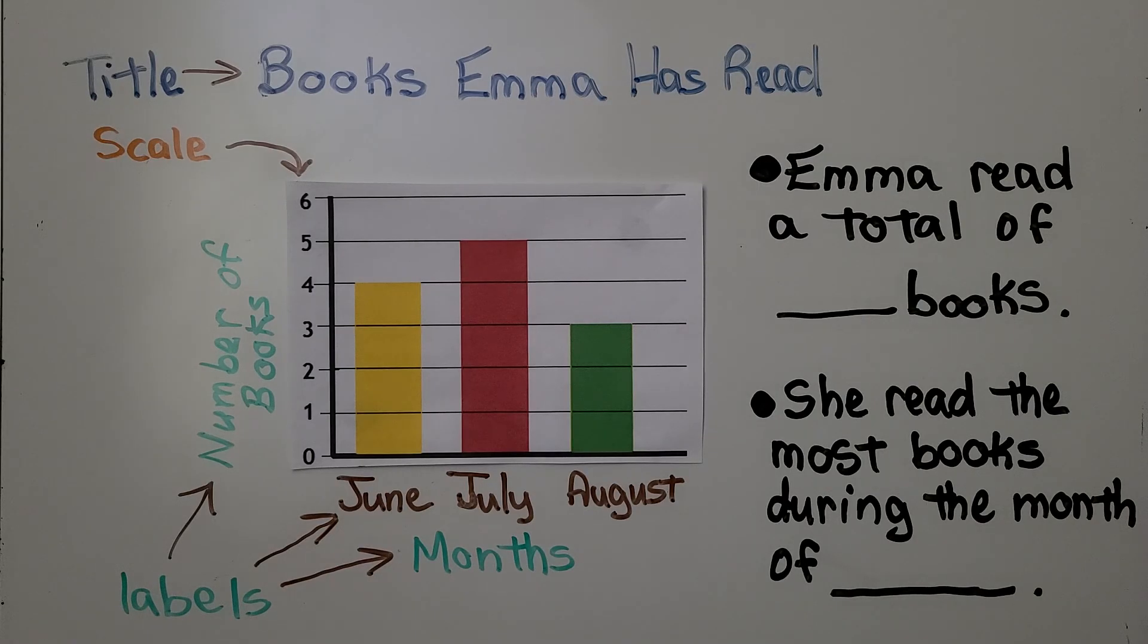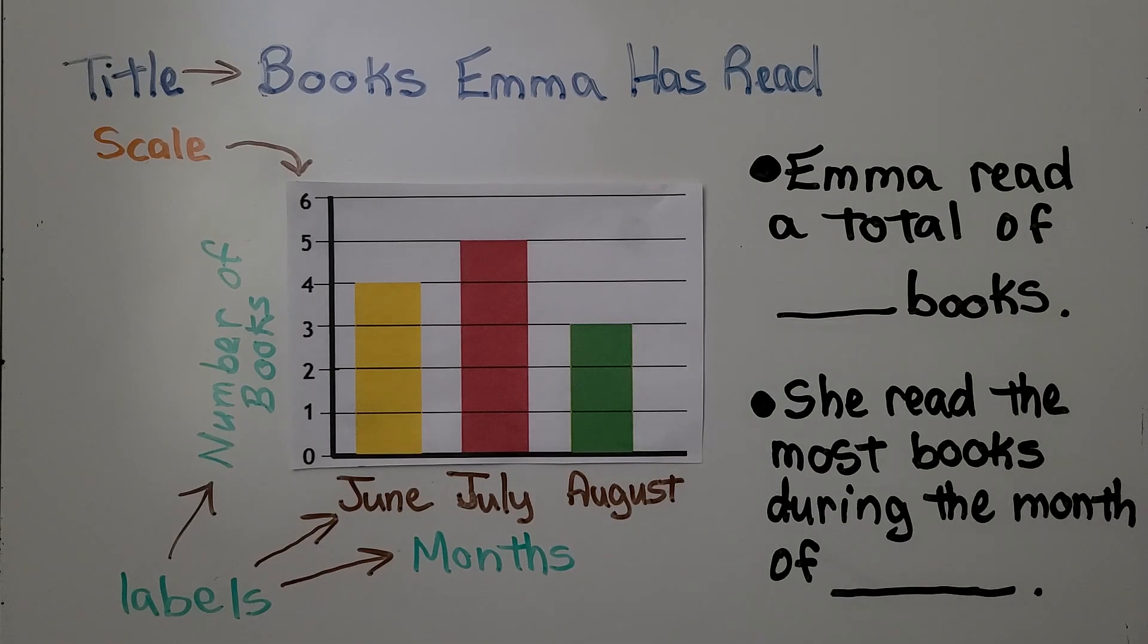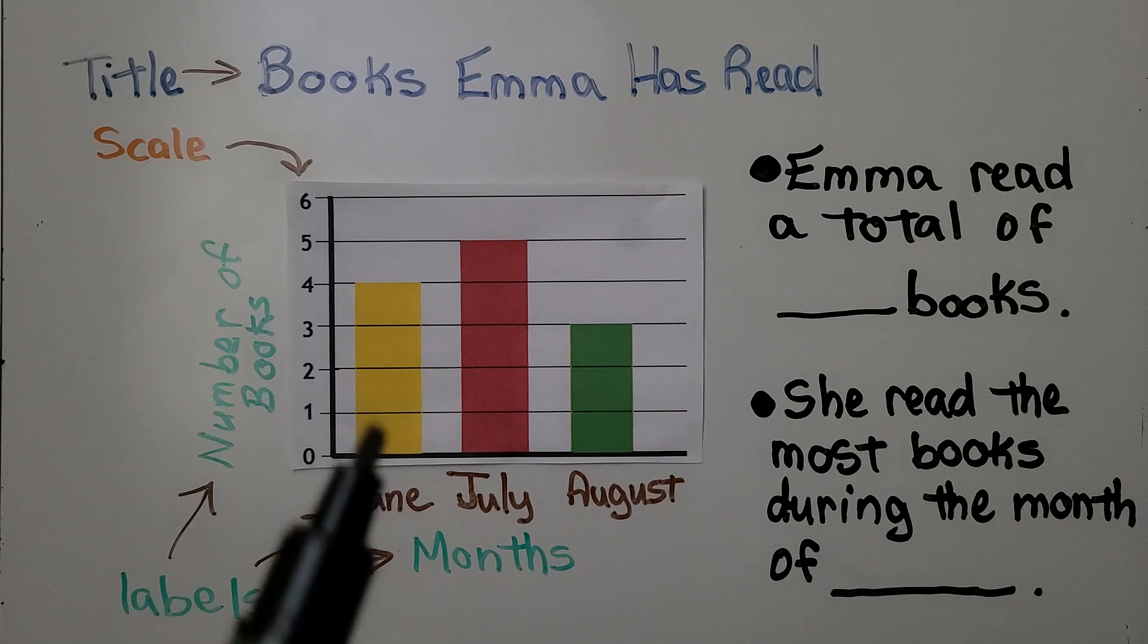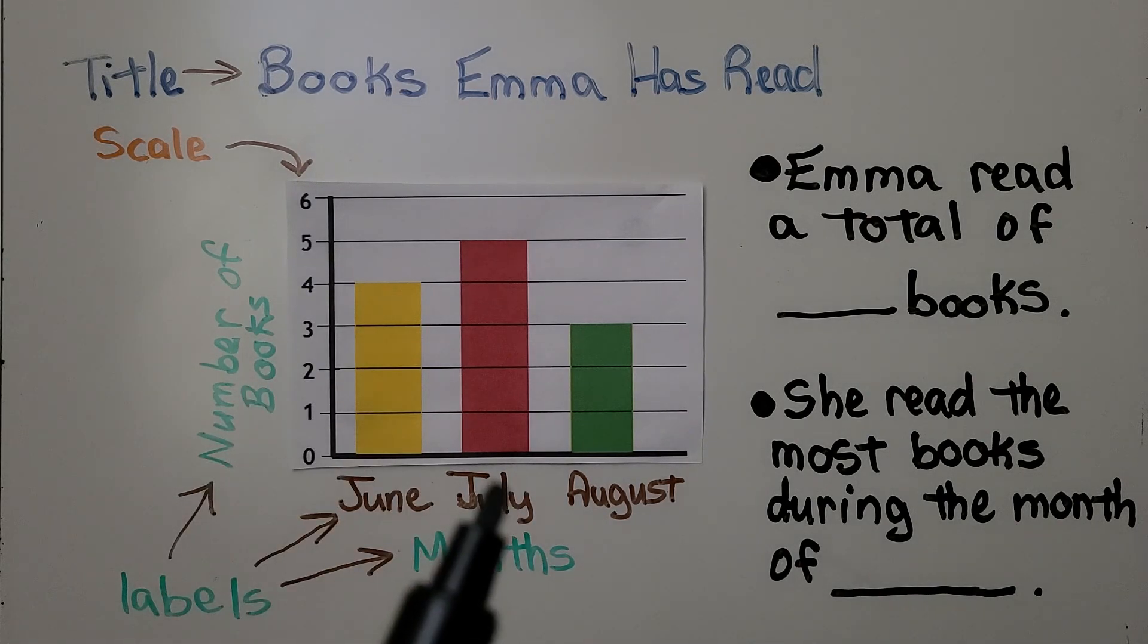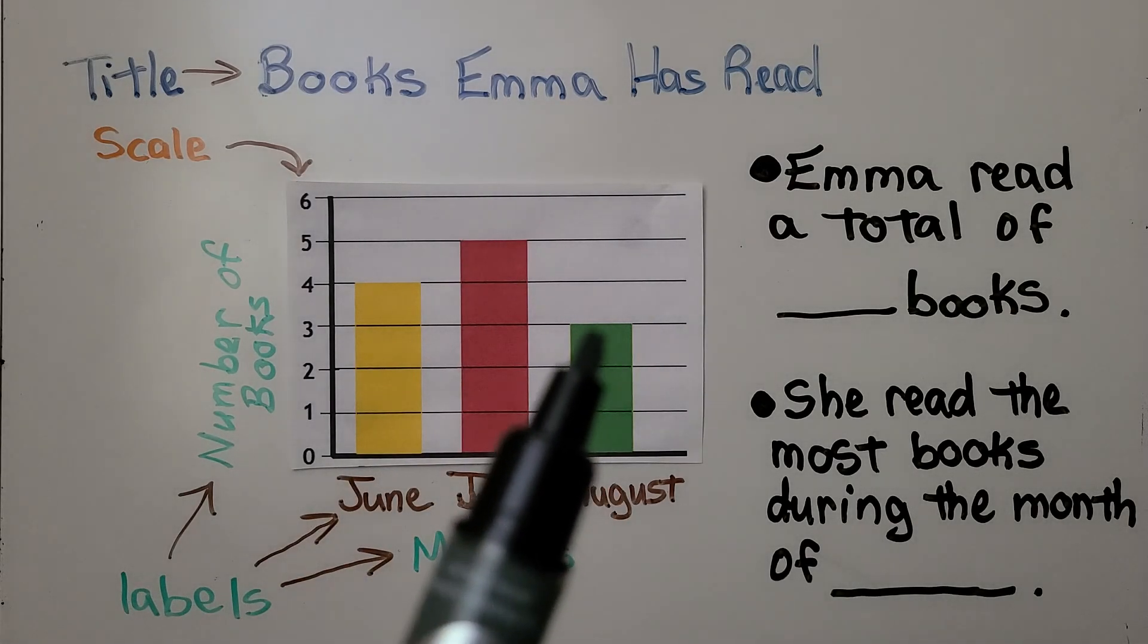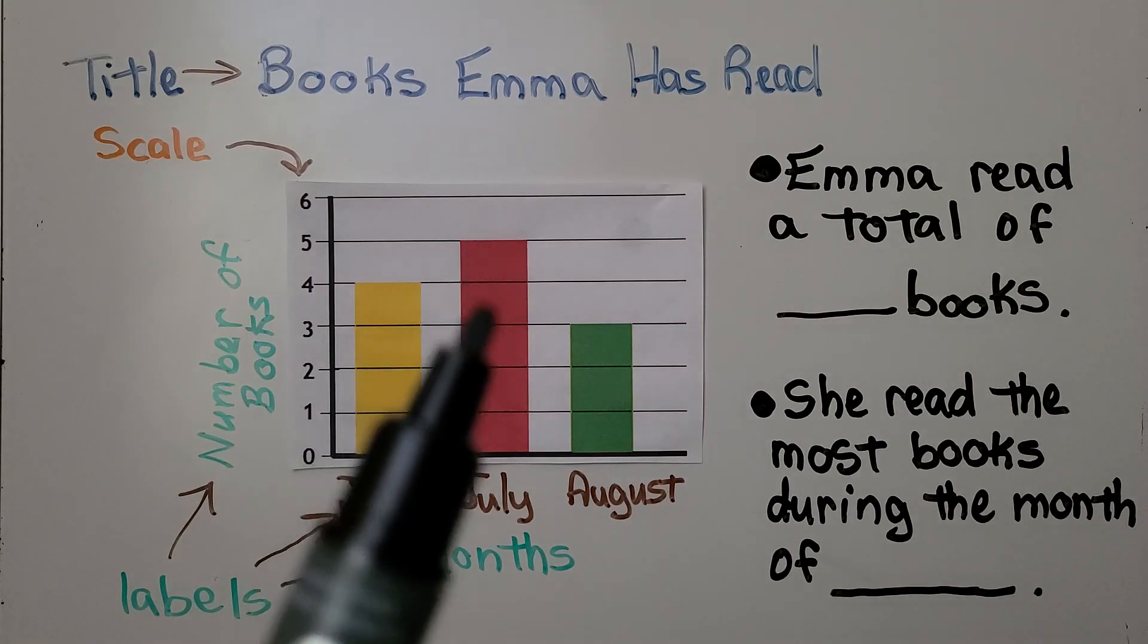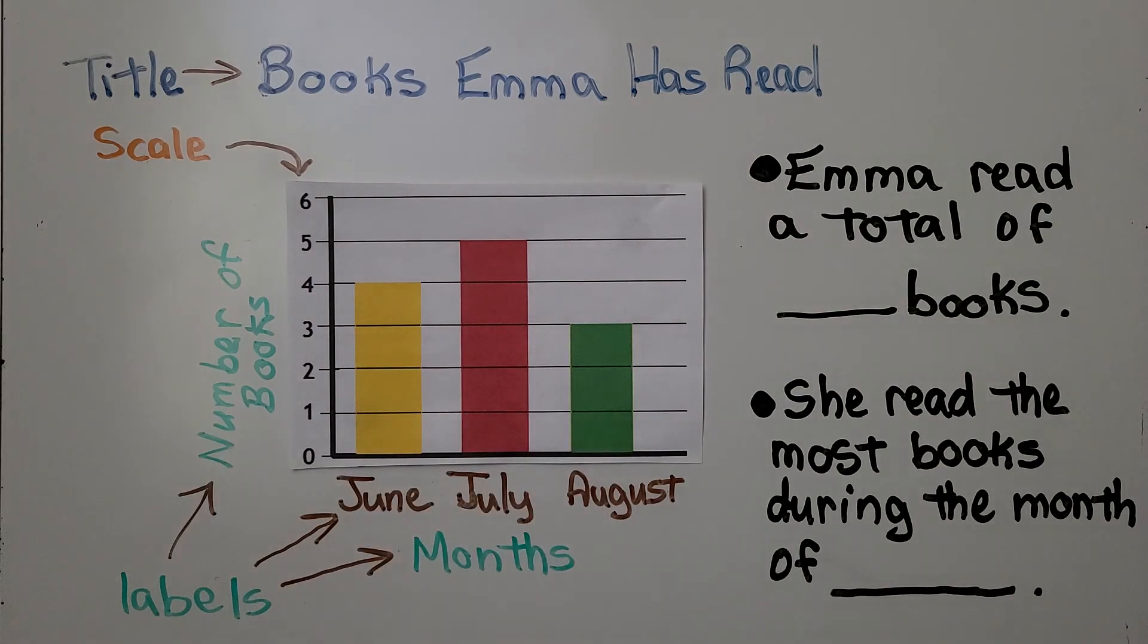Let's answer the questions. Emma read a total of blank books. We can find the total of books she read by looking at June, which is 4, July, which is 5, and August, which is 3. We add them, 4 plus 5 is 9, plus 3 more is 12. That means Emma read a total of 12 books.